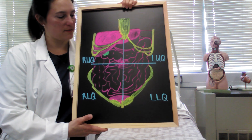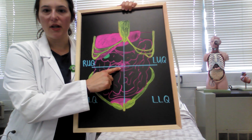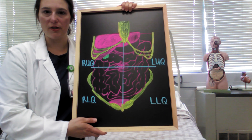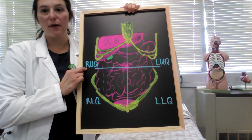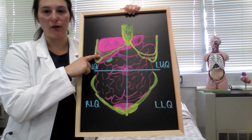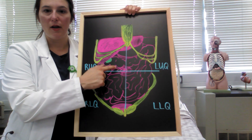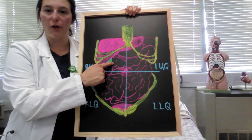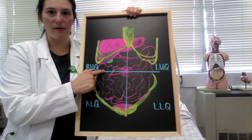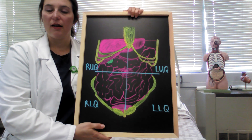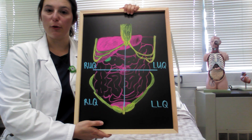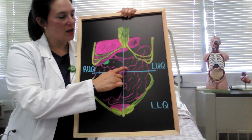We're going to go through the four quadrants. Note that the umbilicus is in the middle and the abdomen is divided into four quadrants. First, we're going to look at the right upper quadrant — here you will find your liver, your gallbladder, your duodenum, part of your transverse colon, and part of your ascending colon. You'll also find your right kidney and the head of your pancreas.